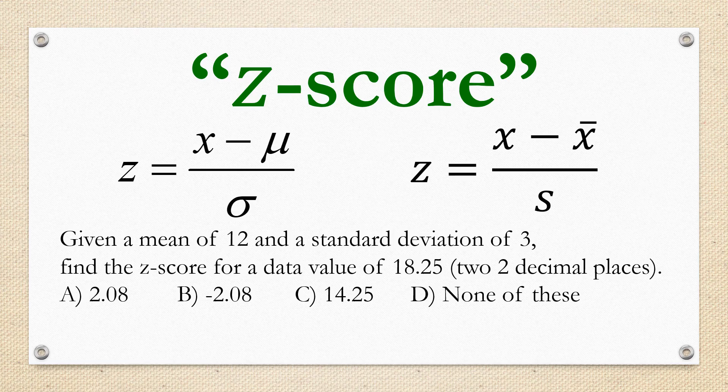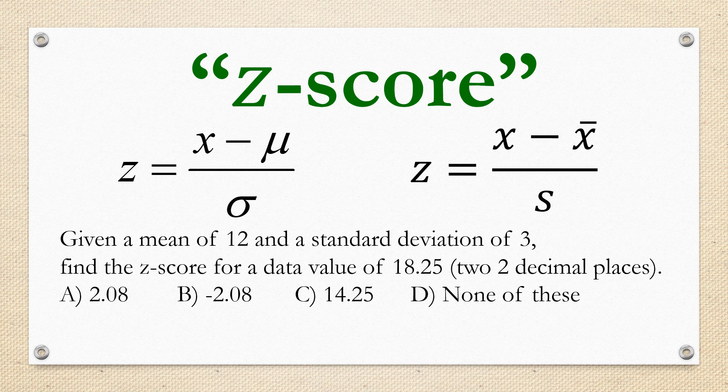So let's practice plugging into this formula. Given a mean of 12 and a standard deviation of 3, find the z-score for a data value of 18.25 to 2 decimal places. Go ahead and pause the video and check to make sure you know how to do this on your calculator. If you said 2.08, you're correct.